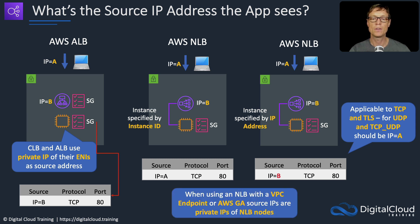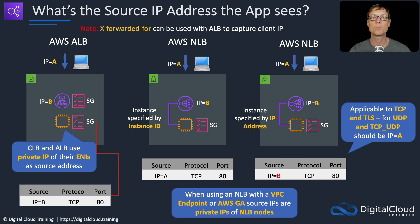Also, when using an NLB with a VPC endpoint or AWS Global Accelerator, the source IPs are the private IP addresses of the NLB nodes. One last point: X-Forwarded-For can be used with ALB to capture the client IP address.